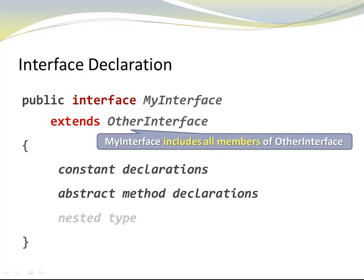Interfaces can extend other interfaces. For example, I could have an interface myInterface that extends other interfaces. Notice the keyword extends. When we implement an interface, we would use the keyword implements. Here we use the keyword extends because myInterface extends the other interface. MyInterface includes all members of otherInterface plus some additional ones.